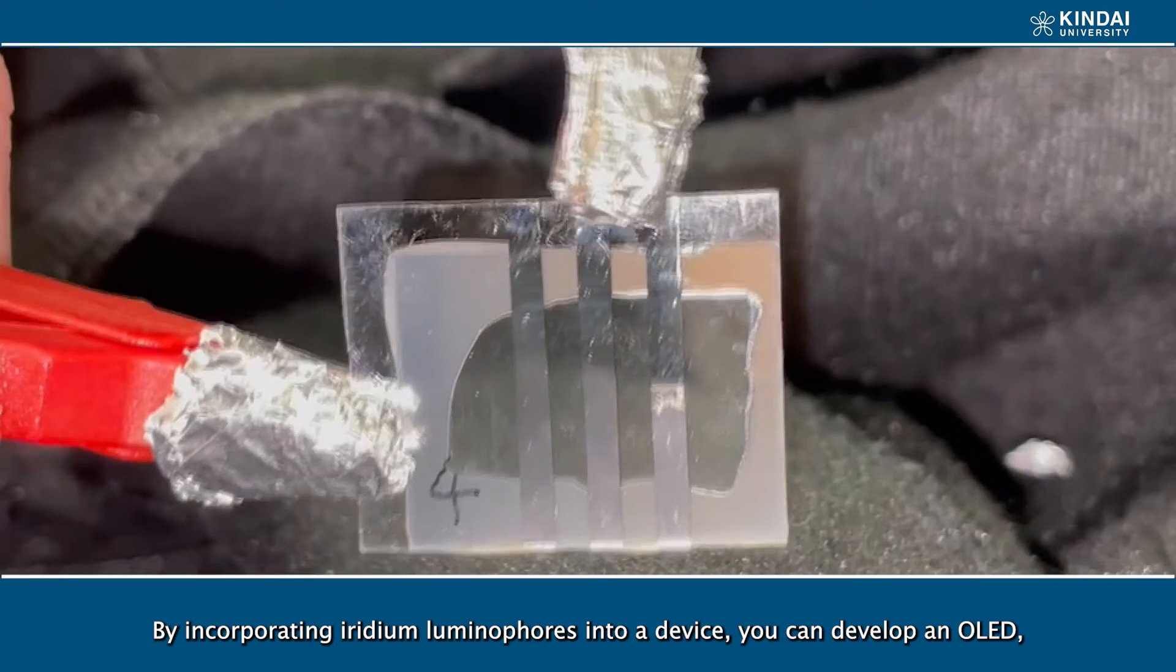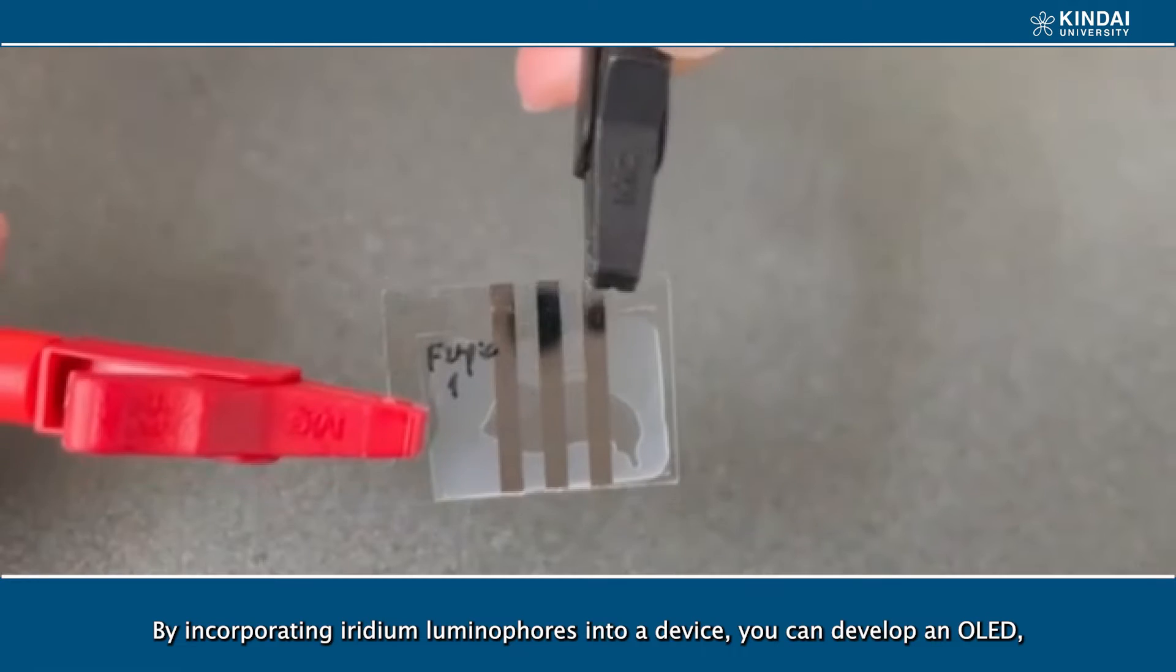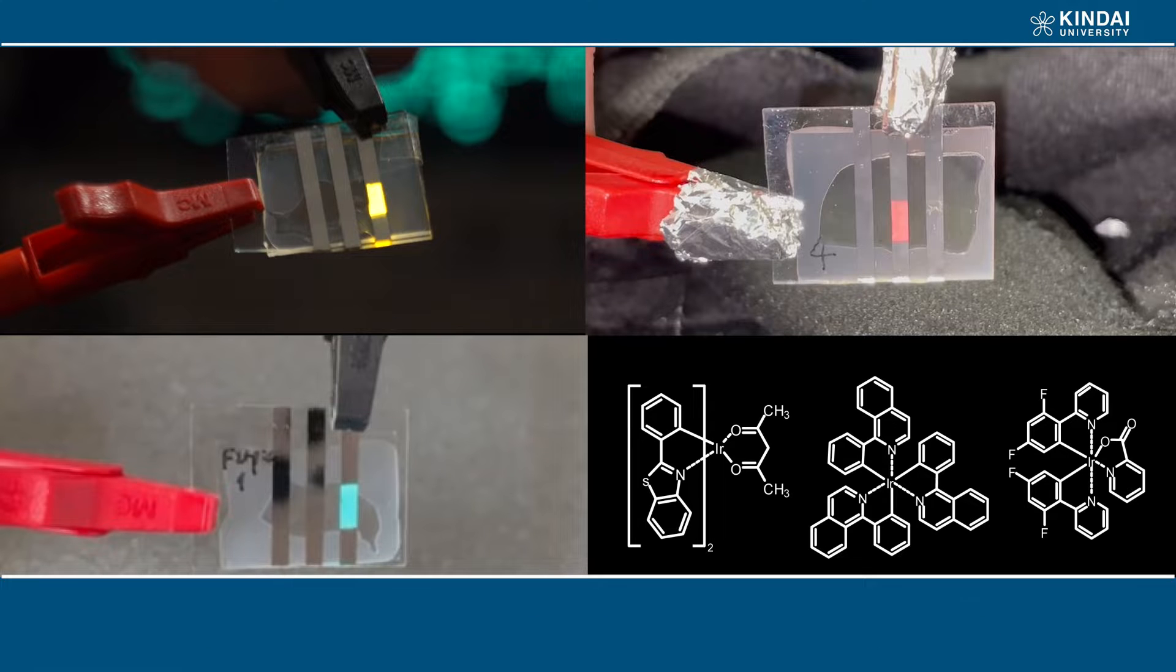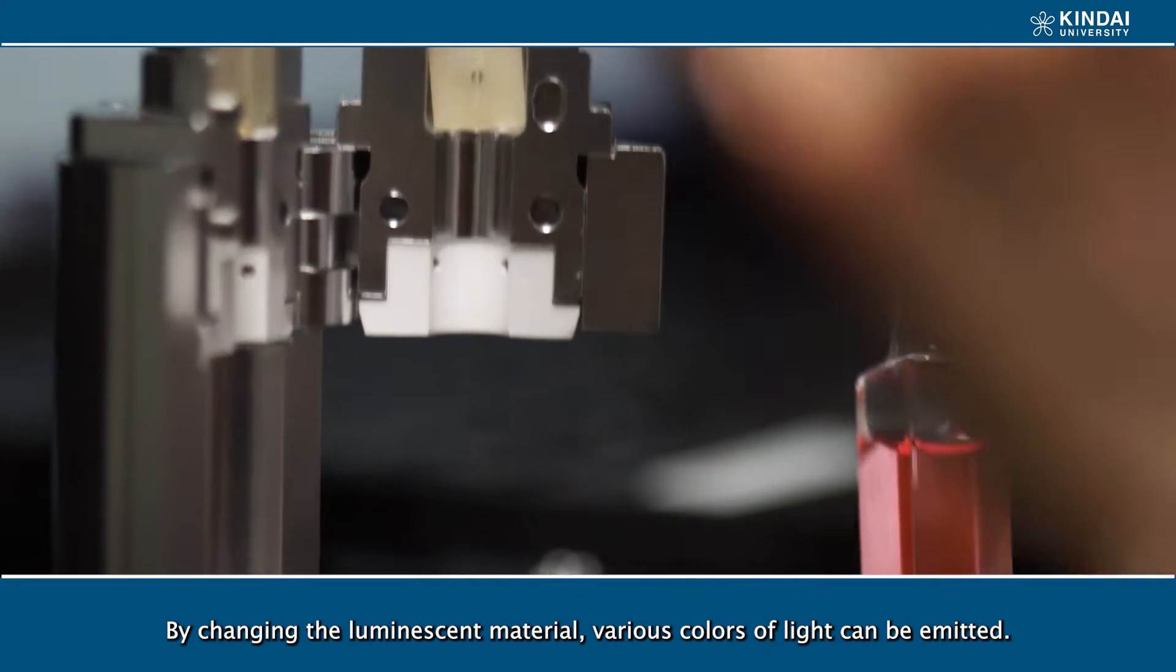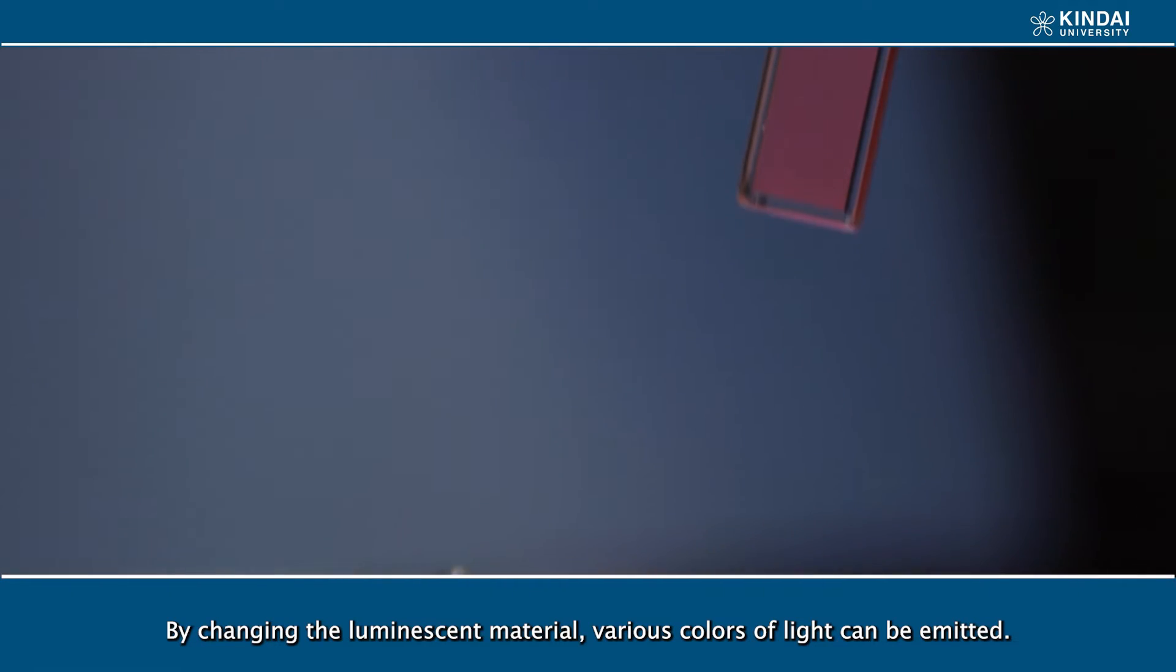By incorporating europium luminophores into a device, you can develop an OLED, organic light emitting diode, which glows when electricity is applied to it. By changing the luminescent material, various colors of light can be emitted.